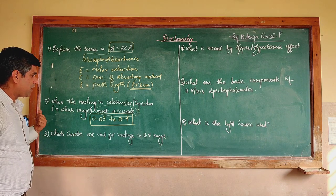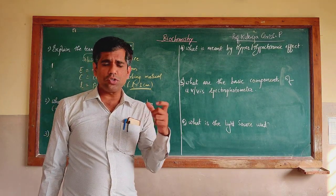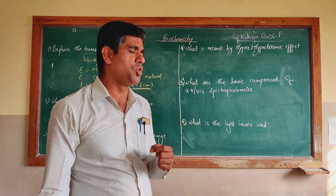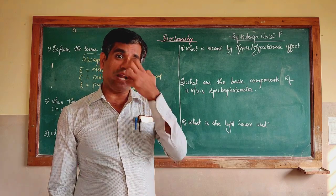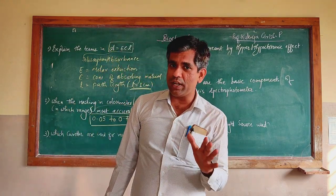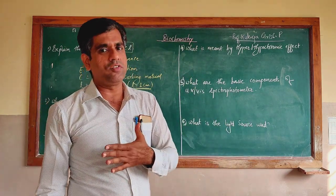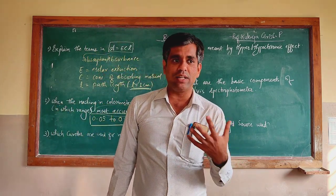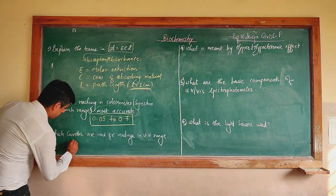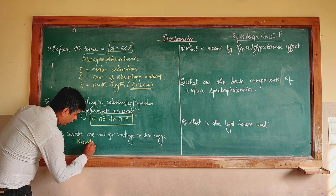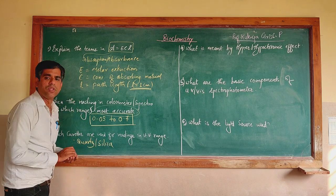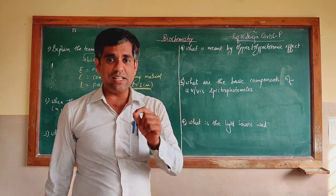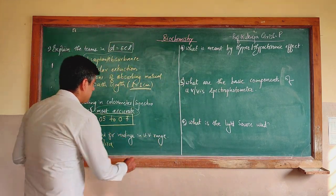The next question: which cuvettes are used for readings in the UV range? Most of the time in the spectrophotometer, glass cuvettes are used. We also have plastic cuvettes, but both glass and plastic absorb light below 310 nanometers. Since the UV range involves wavelengths like 260 and 280 nanometers — below 310 nm — both glass and plastic are opaque there. To avoid interference, we use quartz or silica cuvettes, which are transparent at those wavelengths and are preferred for UV range readings.